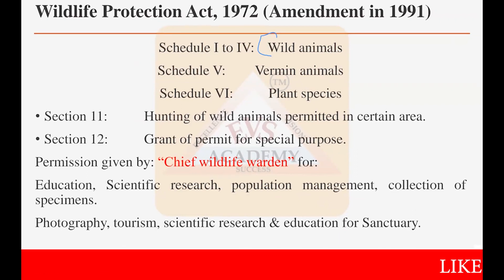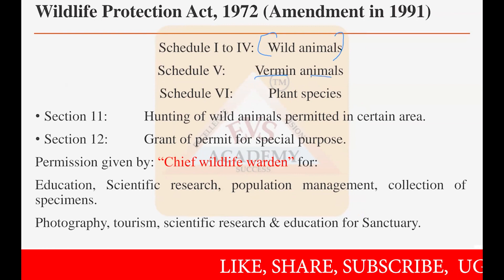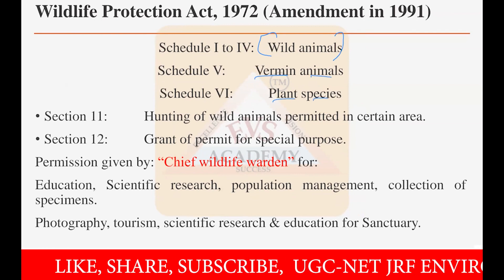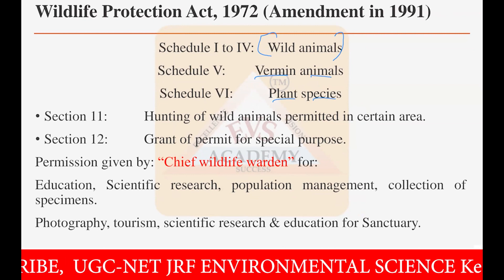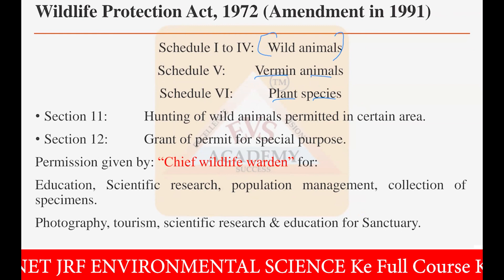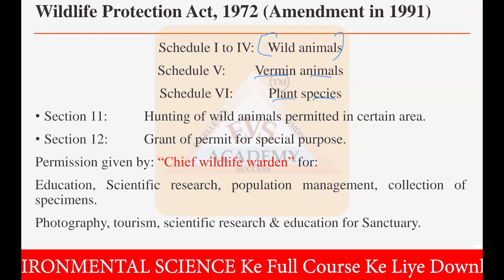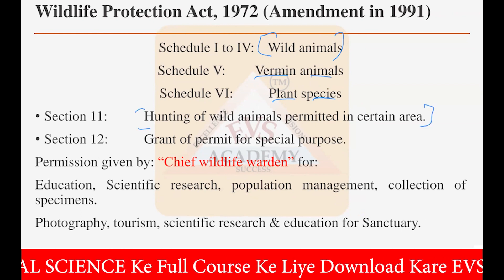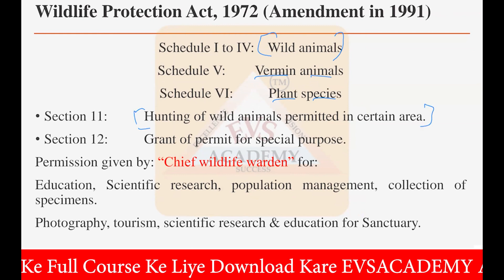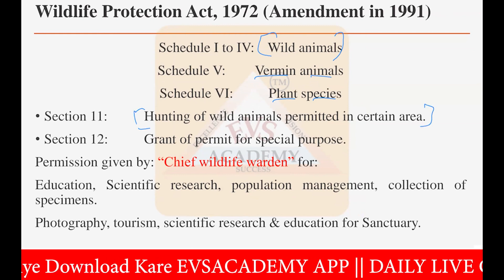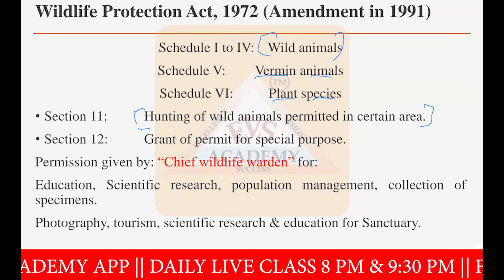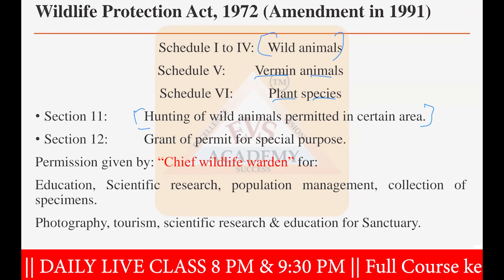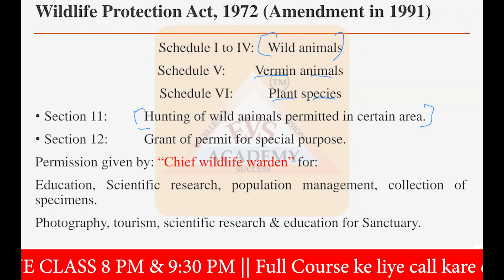Schedule one to four has the list of wild animals; schedule five has the list of vermin animals which are allowed to be hunted; schedule six has the plant species. Under section 11, hunting of wild animals is permitted in certain areas, governed by the chief wildlife warden — without the permission of that authority, nothing is possible. Section 12 grants permits for special purpose hunting.